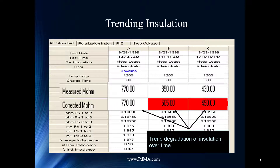When we trend insulation data, you can clearly see the value of temperature correction. The raw measured megaohm values jump around — 700, 800, 400 — all due to temperature changes. But the temperature-corrected value shows a nice, consistent downward trend. We always look at the baseline first, and if there's a change of 10%, 20%, or whatever threshold you set, we highlight that in red so you can investigate further.